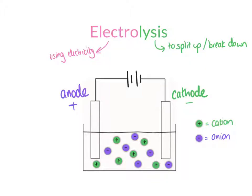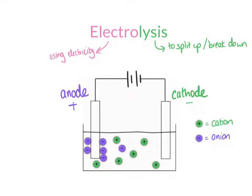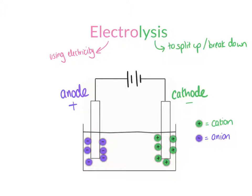The cathode is our negative electrode. That might seem wrong because cations are positive — so why is the cathode negative? When we turn on the electricity and pass current through the circuit, the ions are attracted to the electrodes. The anions are attracted to the anode because opposite charges attract. The cations are attracted to the cathode because they are positively charged and the cathode is negatively charged. So anions go to the anode and cations go to the cathode.